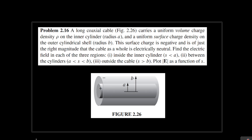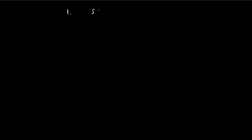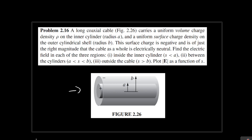Problem 2.16 is really similar to what we've done before, only this time instead of a sphere, we're dealing with a cylinder. In order to find the electric field, we're going to divide it into three cases: the first case is where s, the radial component, is smaller than a; the second is where s is between a and b; and the third when s is larger than b, so outside of the two cylinders.